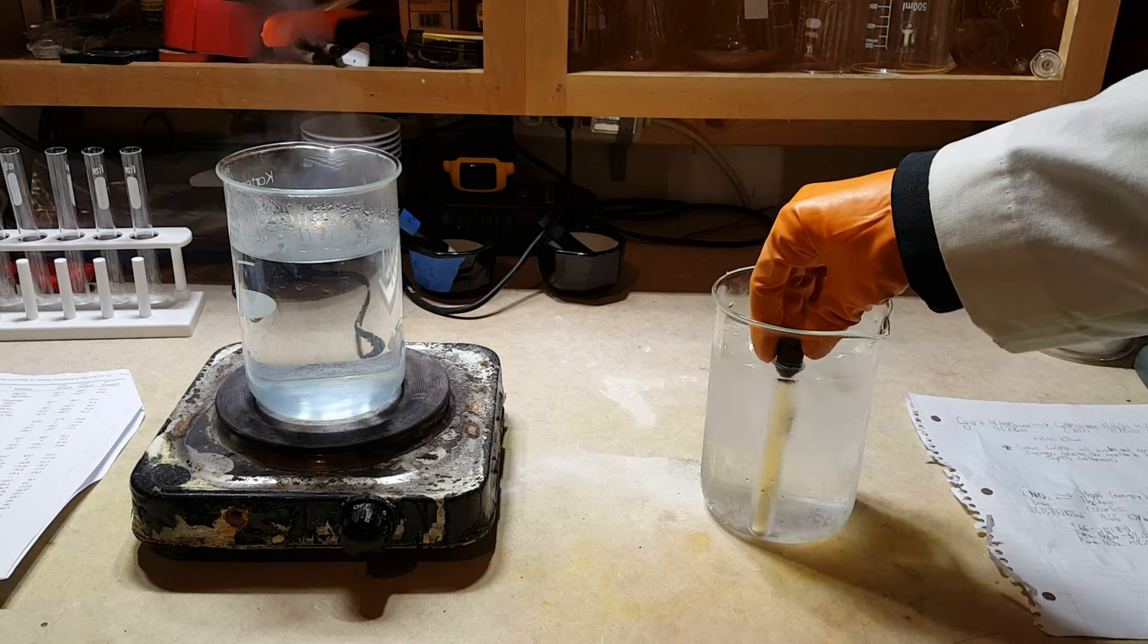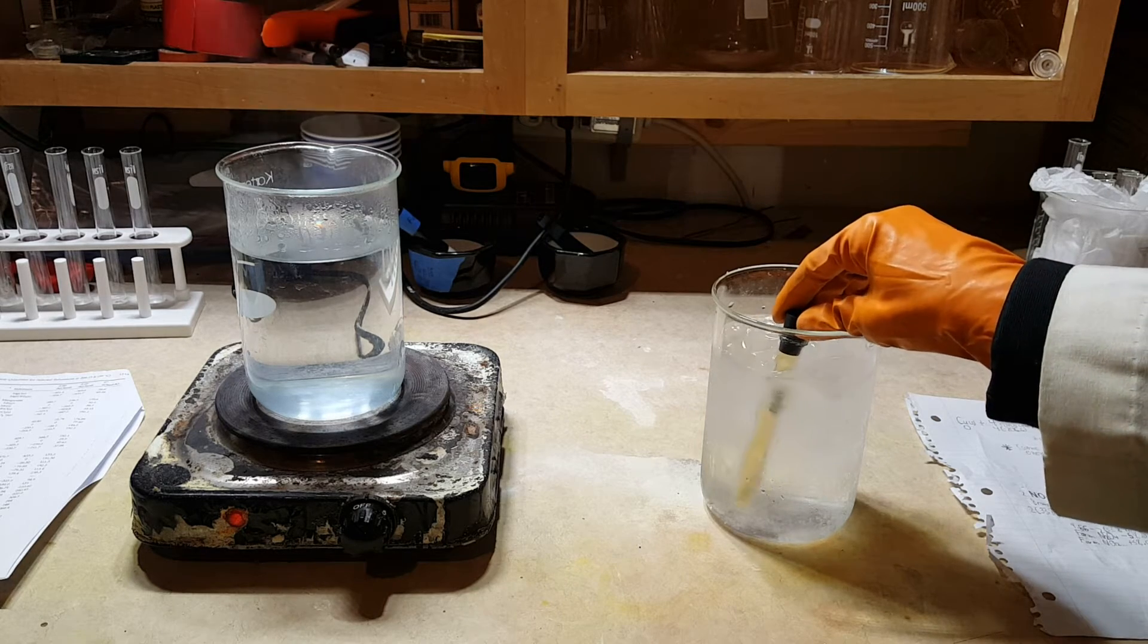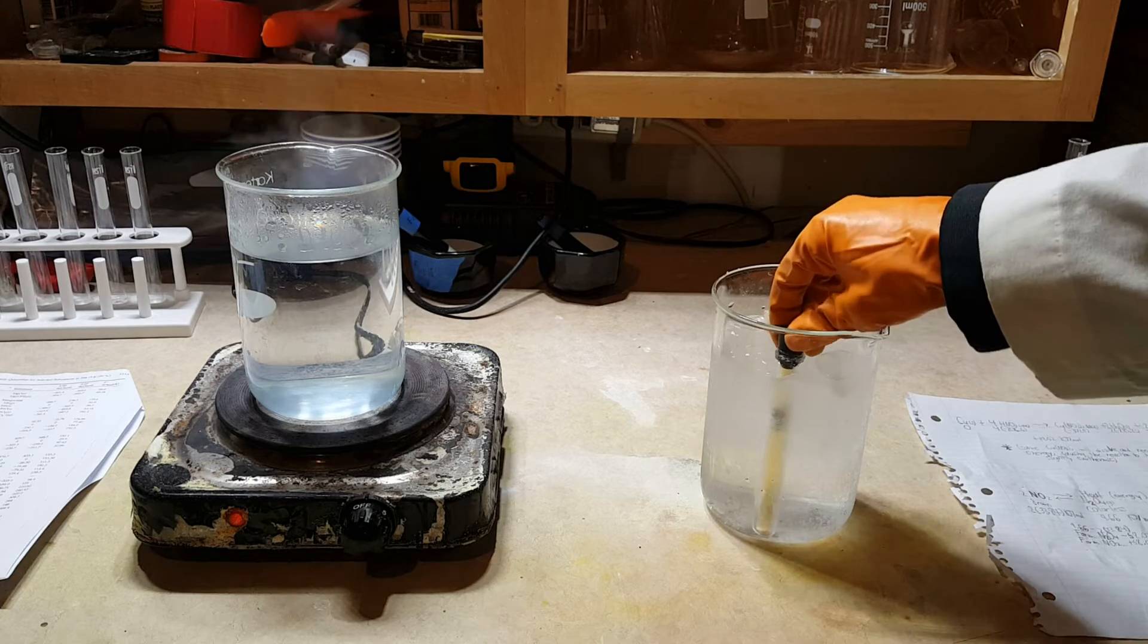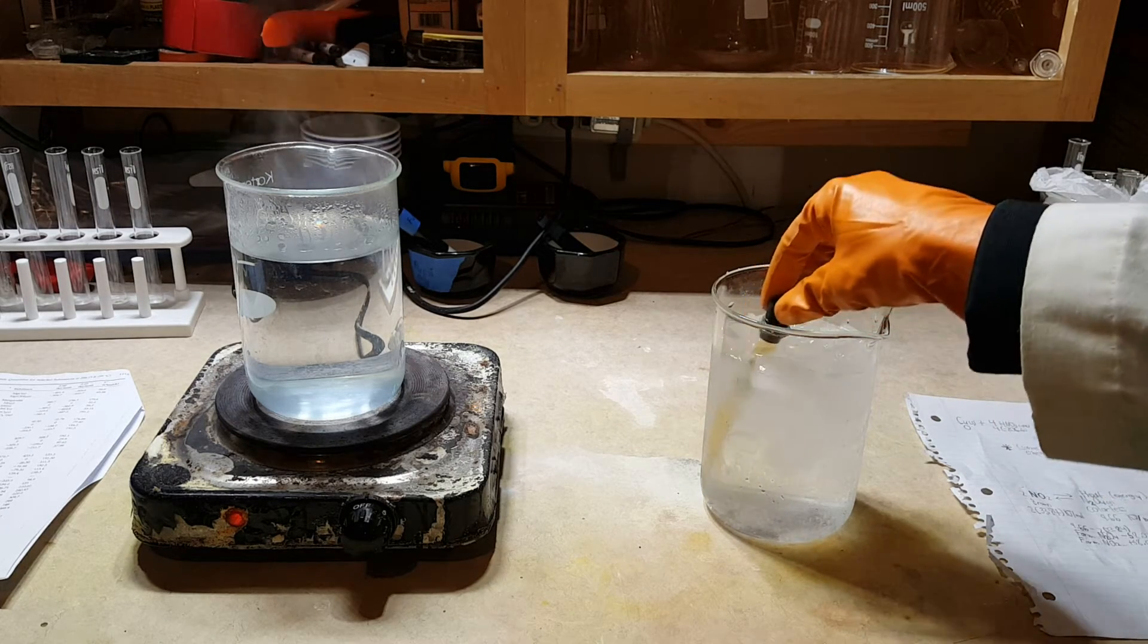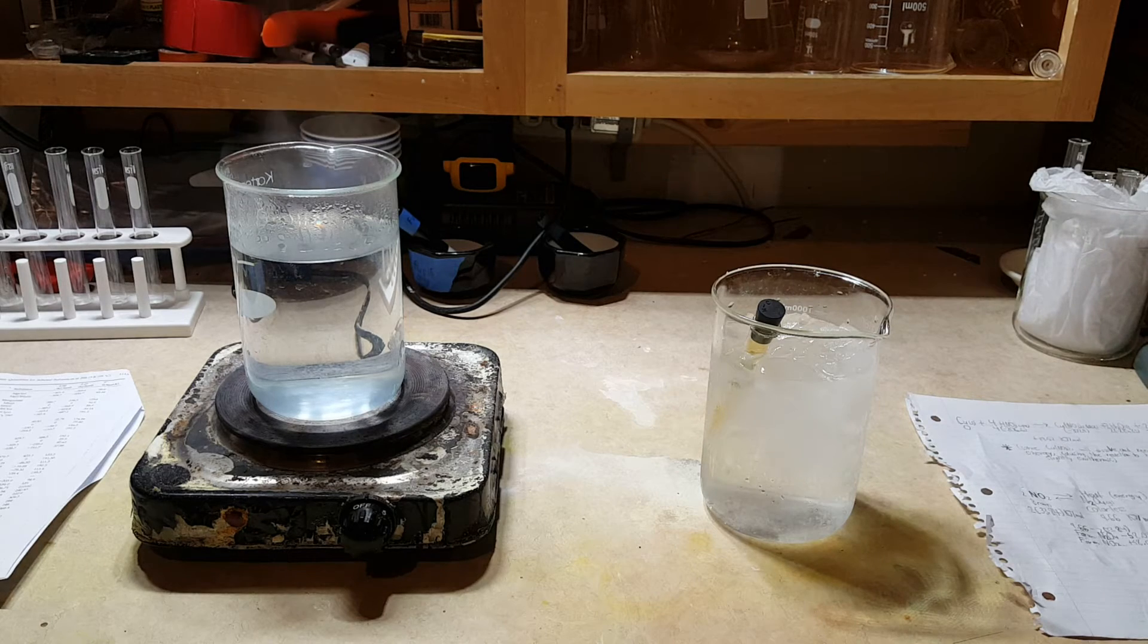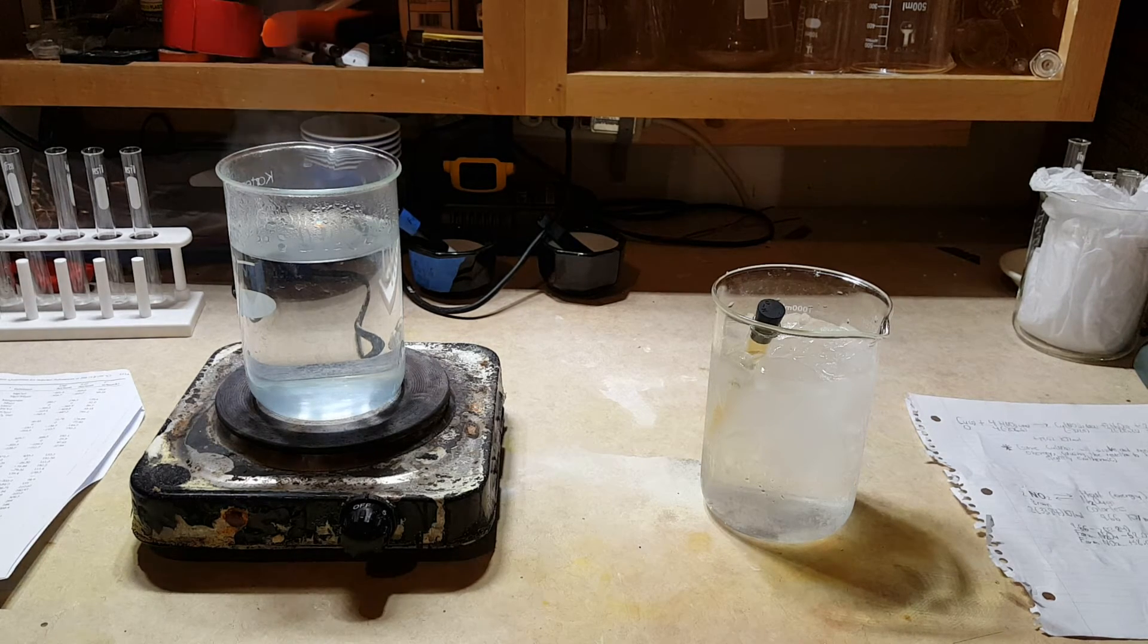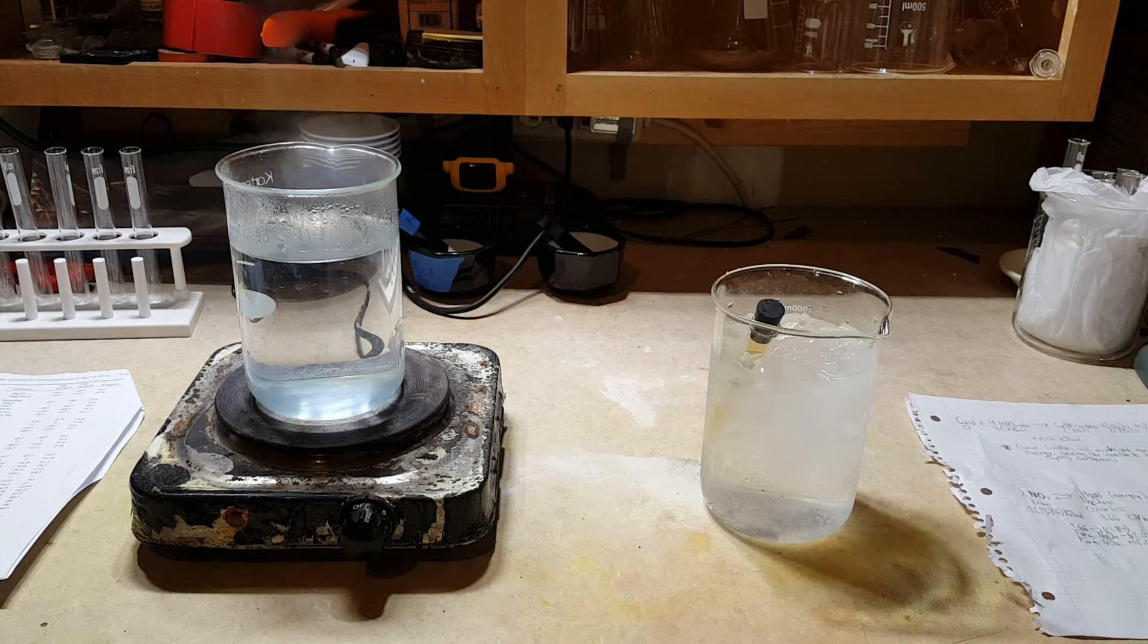Alright, now as we take more and more energy away from this system, more and more dinitrogen tetraoxide, our colorless gas, is going to form. And so as you can see, we have shifted our equilibrium towards the dinitrogen tetraoxide because there's not enough energy there to break it down and form nitrogen dioxide. Let's remove the sample.